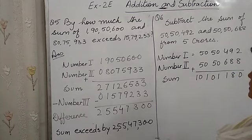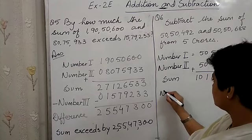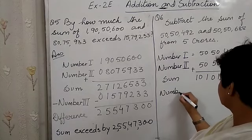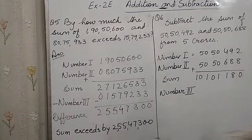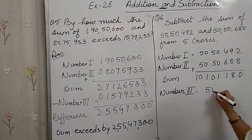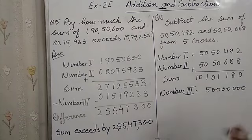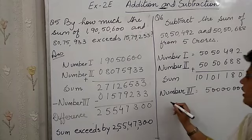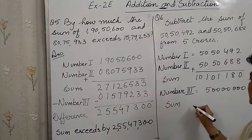So here we get the sum: 1, 0, 1, 0, 1, 1, 8, 0. Now number 3 is 5 crores. 5 crores will have 7 zeros: 5, 0, 0, 0, 0, 0, 0, 0.